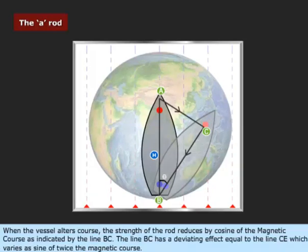When the vessel alters course, the strength of the rod reduces by cosine of the magnetic course, as indicated by the line BC. The line BC has a deviating effect equal to the line CE, which varies as sine of twice the magnetic course.